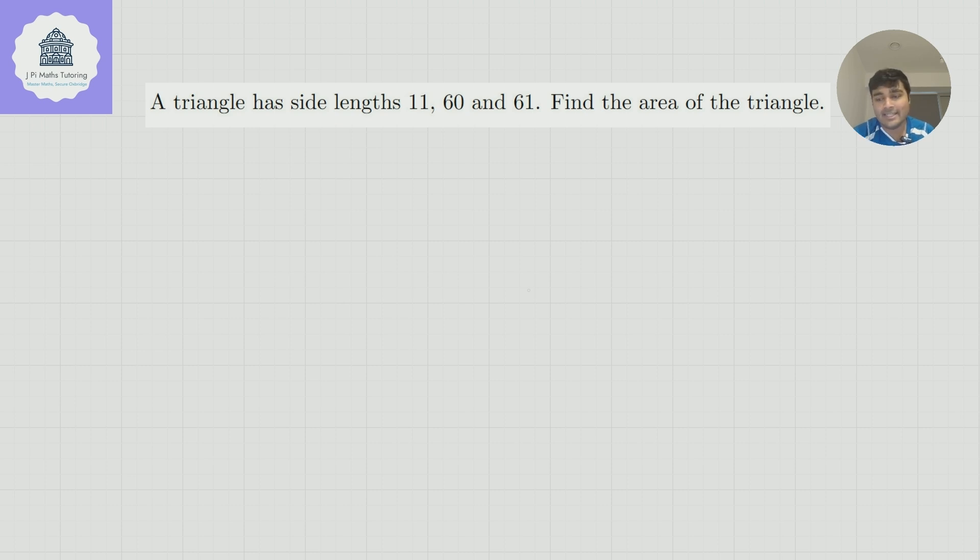And conveniently, it is. So if we look at the two shortest sides squared, now, I don't know what 11 squared and 60 squared is. Well, actually, I do know what those both are. But I'm going to leave this as 60 squared, and I'm just going to use the fact that I know what 11 squared is.